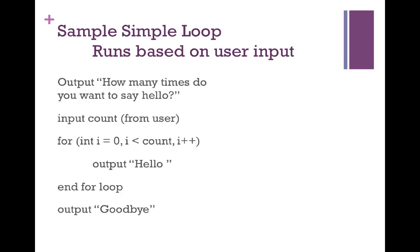Here's an example using user input to control how many times the for loop runs. We grab the input from the user and store it in a variable called count. Then we launch into the for loop, creating a temporary variable i set to zero, and check that i is less than the value the user put in for count. If it is, we output hello, increase i by one, and perform the check again.